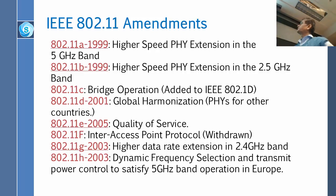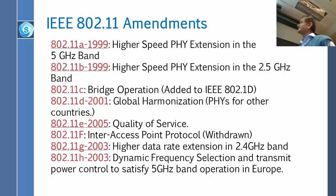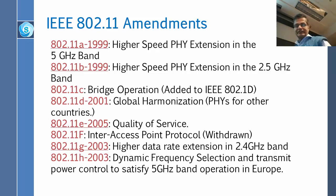OFDM is good, but the 5 gigahertz band was no good for broad adoption. So people came back to G. H was something — dynamic frequency selection for Europe.